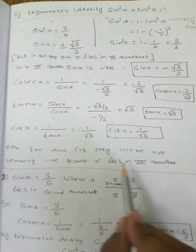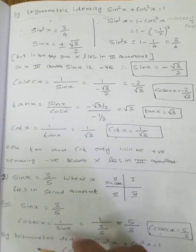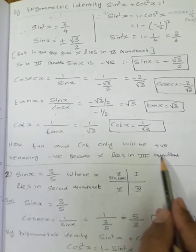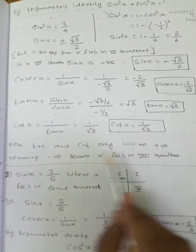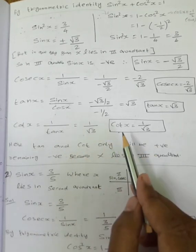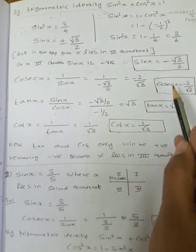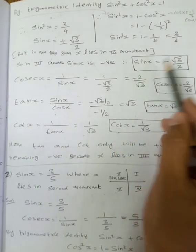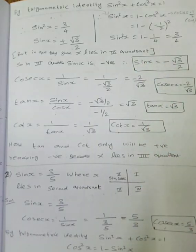So if we check the quadrant — x lies in the third quadrant. What is positive? Tan and cot are positive. Remaining is negative. So cosecant and sin: negative. Cos and secant: all negative.